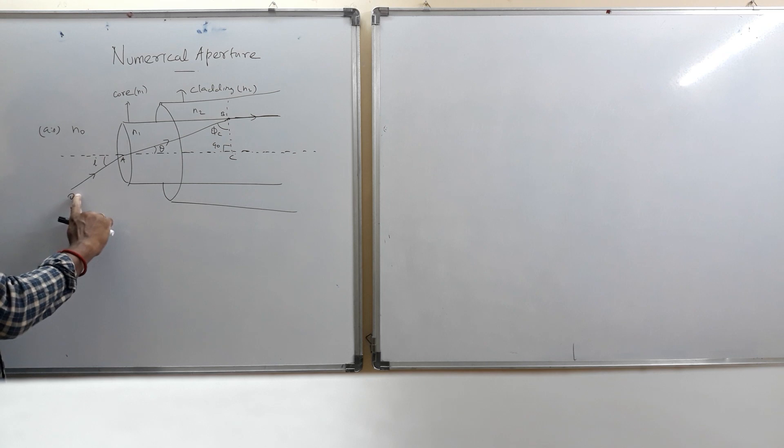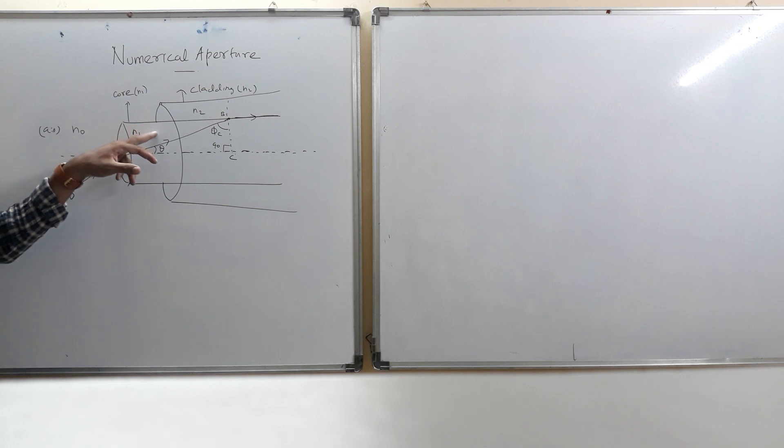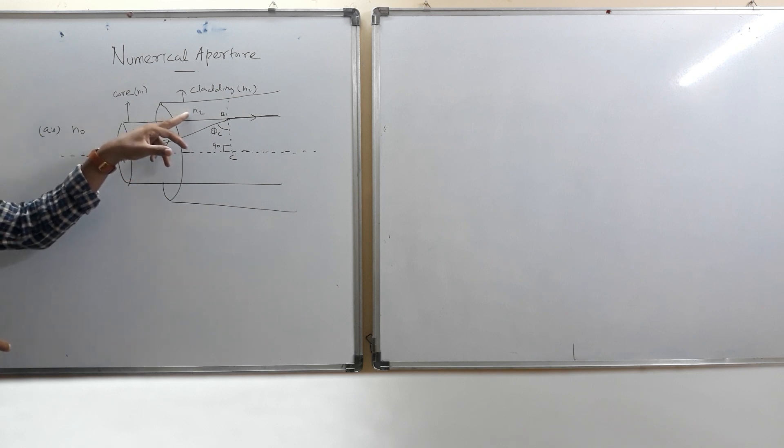The light is launched as OA. OA is a ray of light which makes an angle of incidence i. This is core axis. This is cladding. Core, cladding. The refractive index of the core is N1. Refractive index of the cladding is N2.